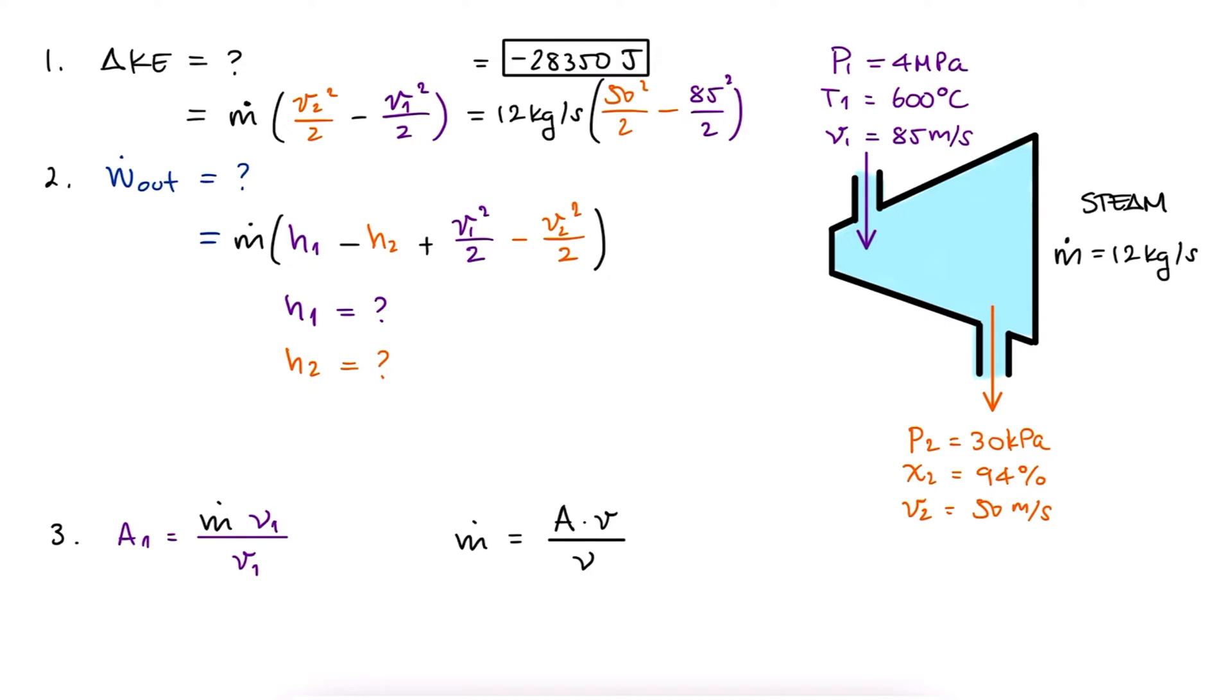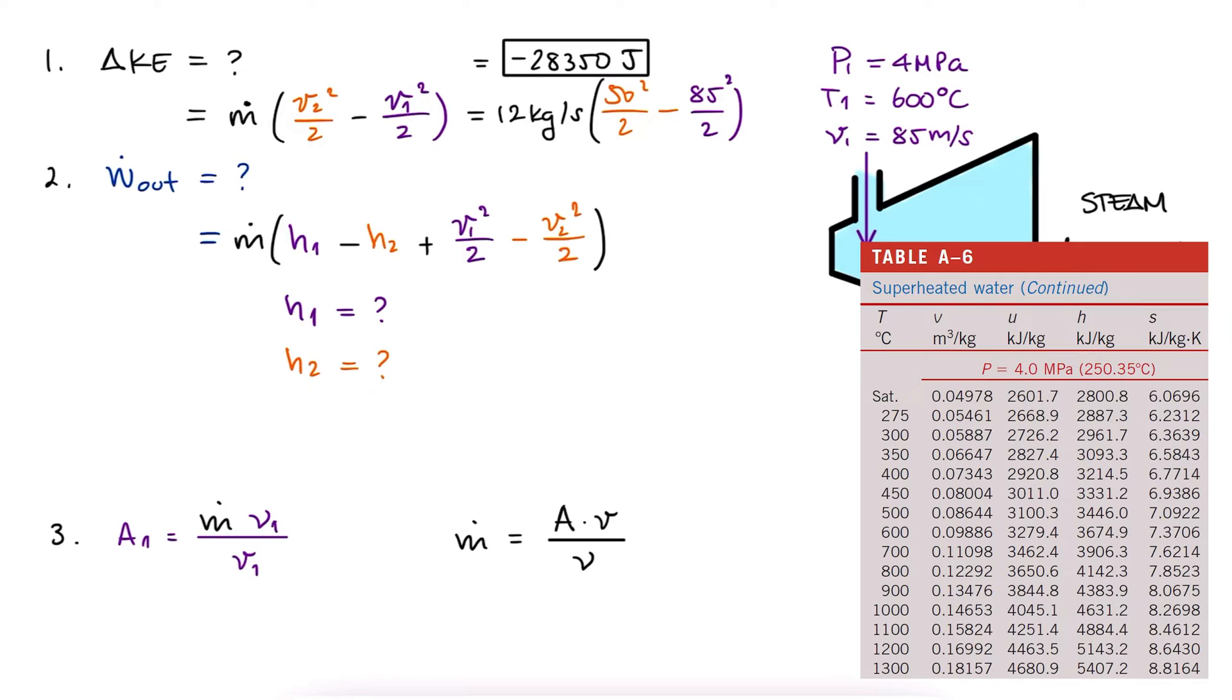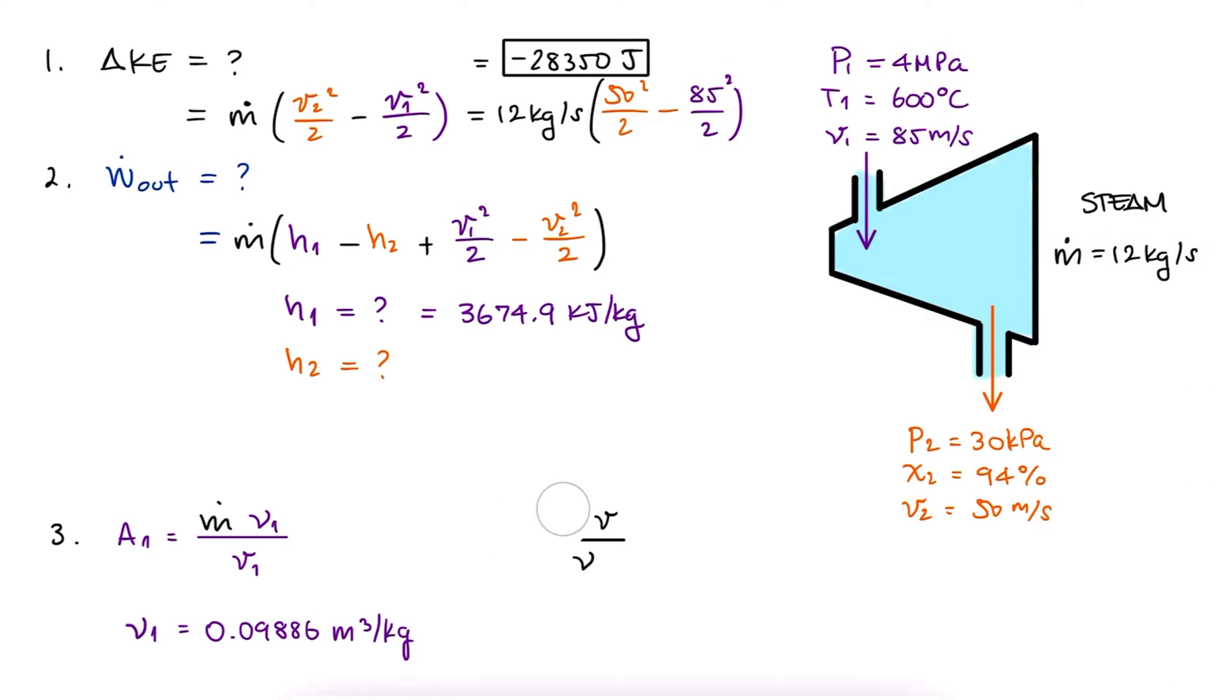So for state 1, let's go to the superheated tables, and for a pressure of 4 MPa and a temperature of 600 degrees Celsius, we write down the specific volume and the specific enthalpy. With the specific volume and substituting the other values we got, we can find the area at the inlet.